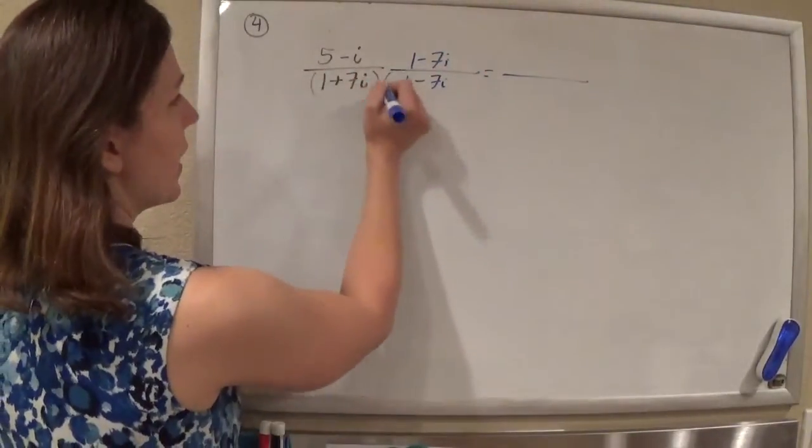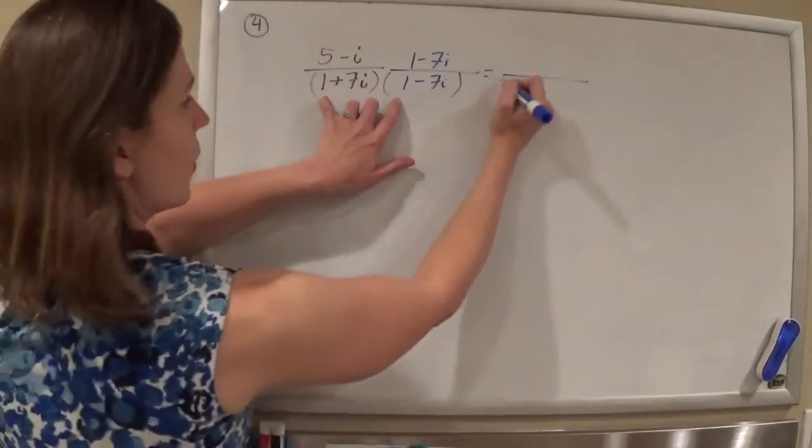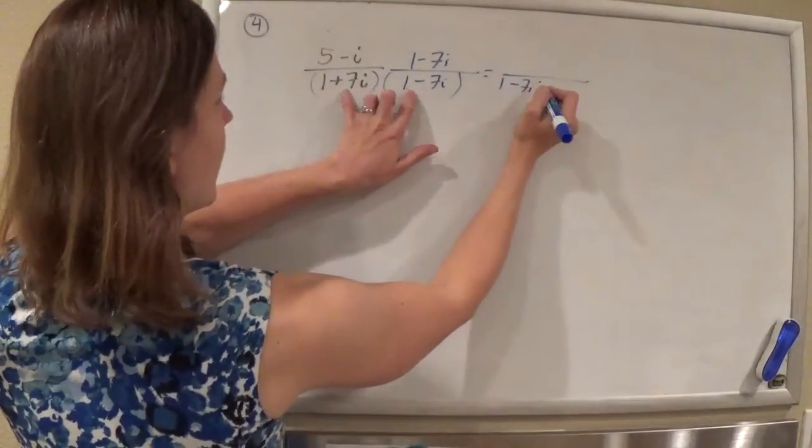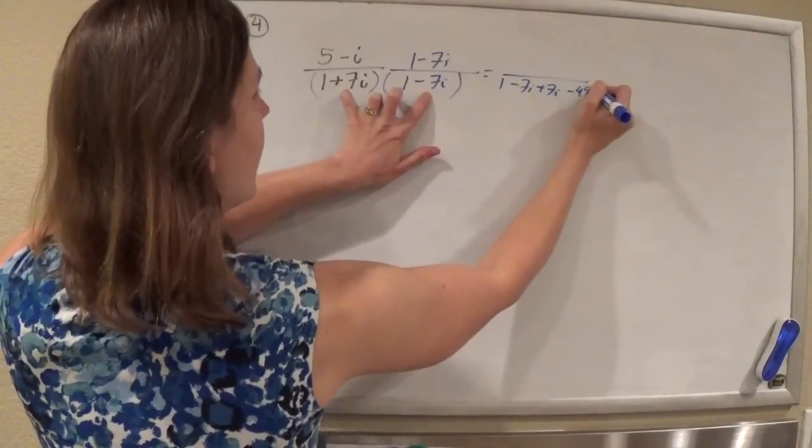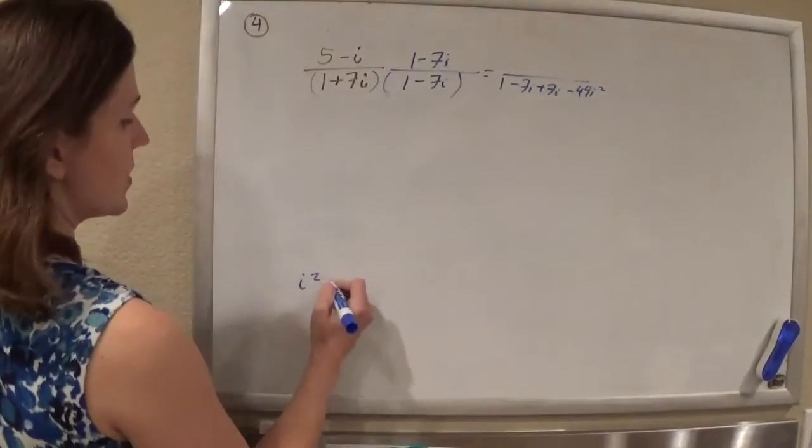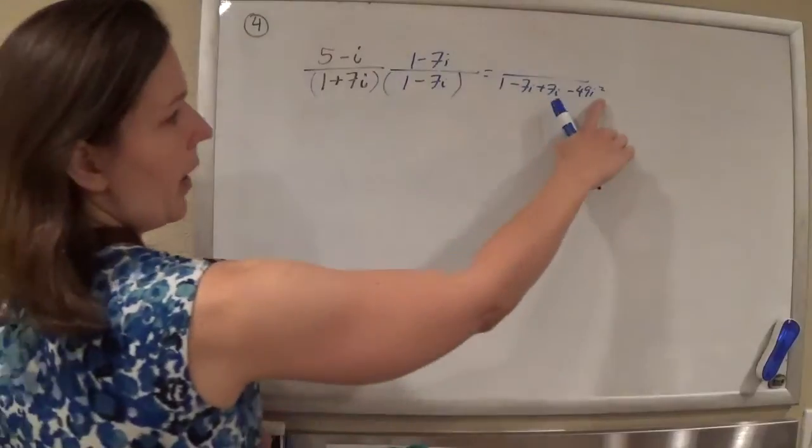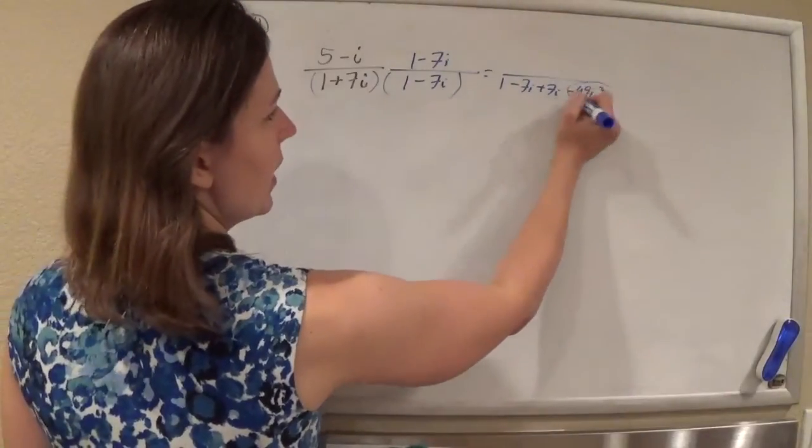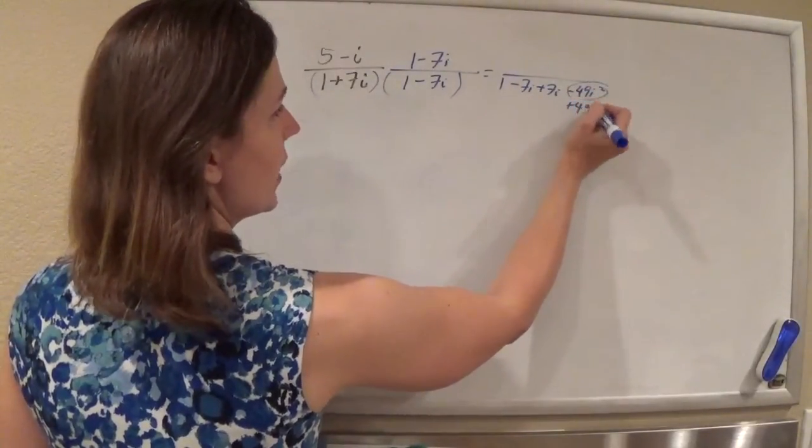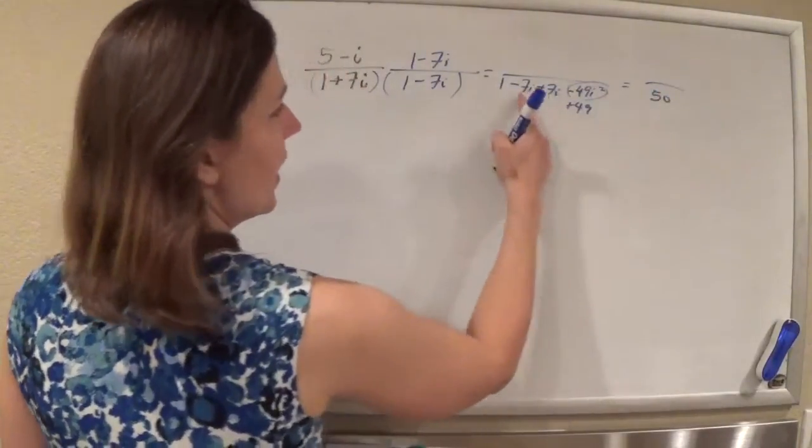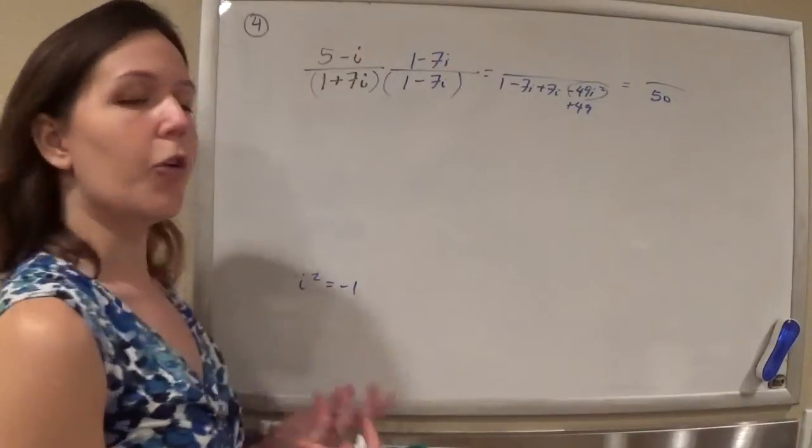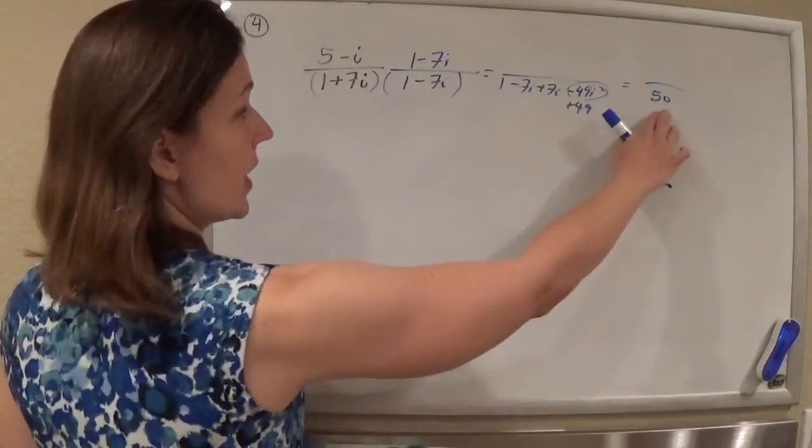So watch what happens when the bottom distributes. We'll have 1 minus 7i plus 7i and then minus 49i squared. And since i squared is negative 1, i squared times negative 49 just becomes plus 49. So we'll have 1 plus 49 is 50, and then negative 7i plus the 7i goes away. No more i's in the denominator for us.